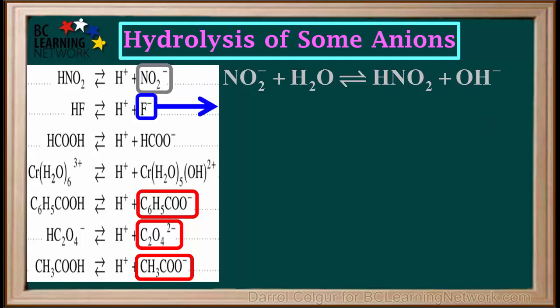Next, we'll do the hydrolysis equation for F-. Being a weak base, F- reacts with water by taking a proton from it, producing its conjugate acid, HF, and a hydroxide ion.